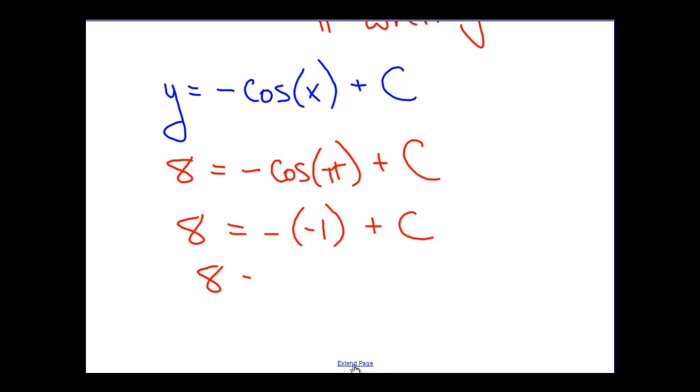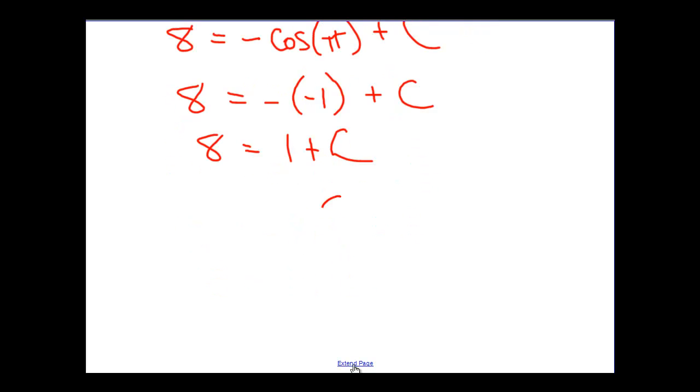Or I want to simplify that a little further. 8 equals 1 plus c and therefore c is equal to 7. And the function that solves that initial value problem is the function y equals minus the cosine of x plus 7.